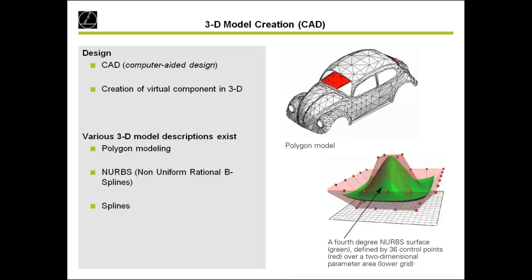Another way is NURBS — non-uniform rational B-splines — shown in the green picture. It's like a shirt: you put different points where you hold the shirt, and if you move one point the complete contour changes. It's very good for long or flat surfaces, for example the roof of a car. But it's not so good for detailed contours with sharp corners — there it's better to use polygon modeling. For mechanical inputs, you can use splines, for example for airplanes where you need fixed forms.